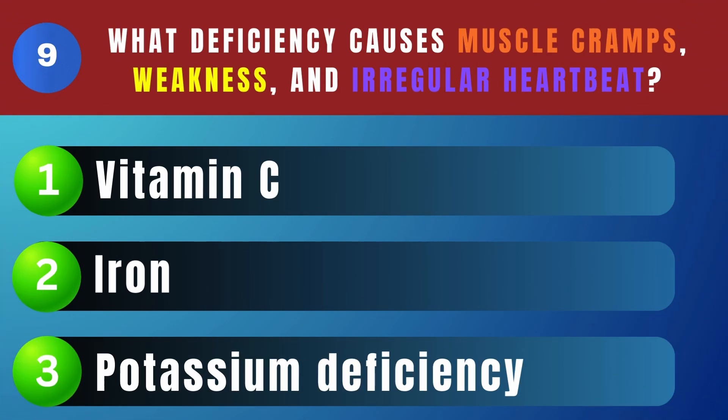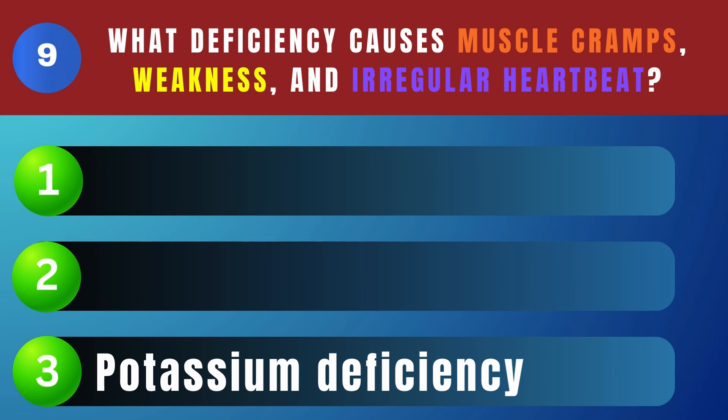What deficiency causes muscle cramps, weakness, and irregular heartbeat? Potassium deficiency.